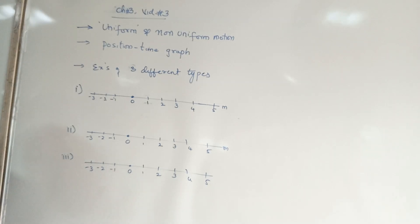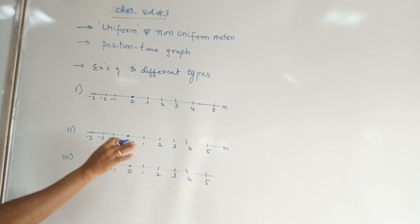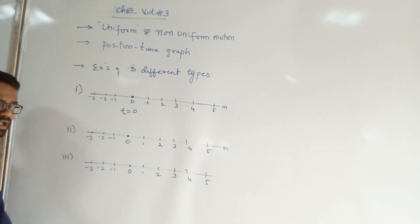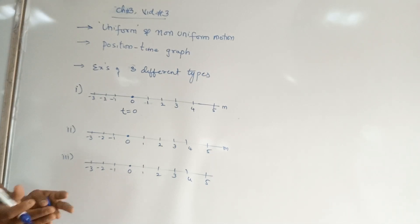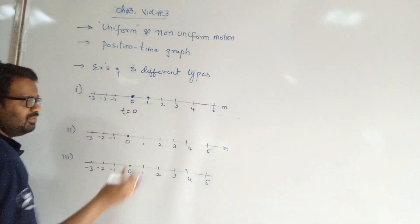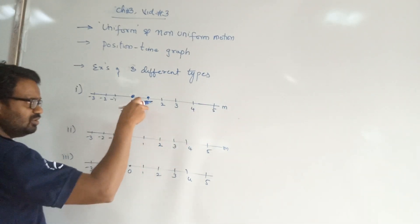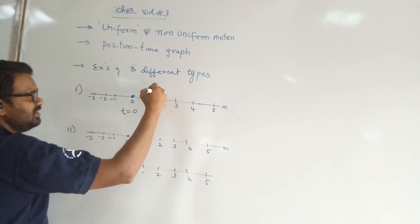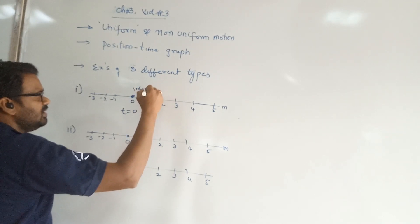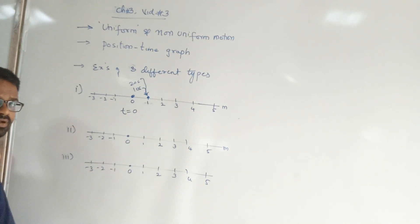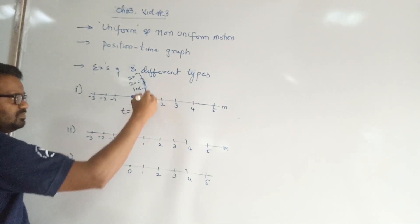I am going to take three different examples to make you understand. Consider an object — let me take the duster in the classroom. At initial time, say 10:30, the duster is at a distance of 1 meter from me. After 10 seconds, the duster is still at 1 meter. After 20 seconds, still 1 meter. After 30 seconds, still at 1 meter. It is not changing its position — this is the first example.